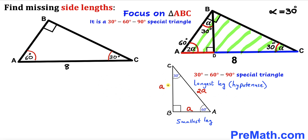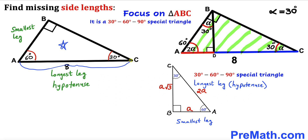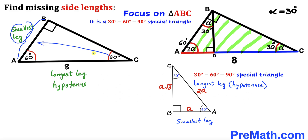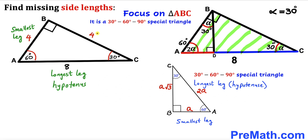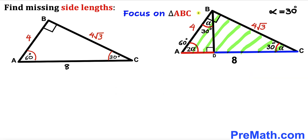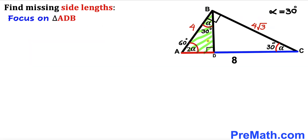In general, if the smallest leg is a, the hypotenuse is 2a and the third leg is a times square root of 3. In triangle ABC, side AC is the hypotenuse and equals 8 units. Side AB is the smallest leg, opposite the 30-degree angle. So AB is half of 8, which is 4 units, and side BC is 4 times square root of 3 units.